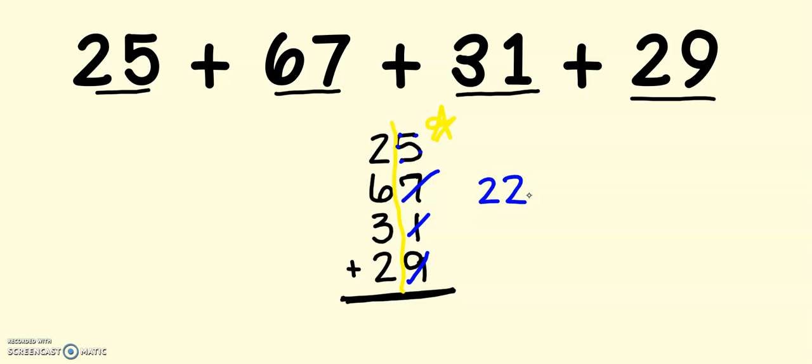Just like in the last problem, I got 22 ones. Now if you remember, when I look to see if I have any new tens, I have to look at this number. And in the tens place, I have 2 new tens. So up top in the tens column, I'm going to write a 2. Then I'm going to pull my 2 ones down to the bottom.